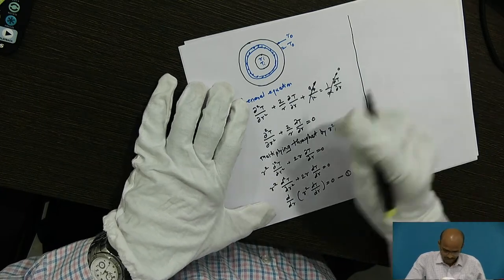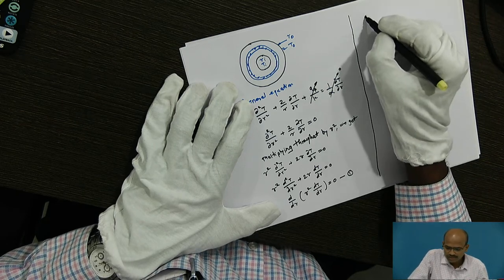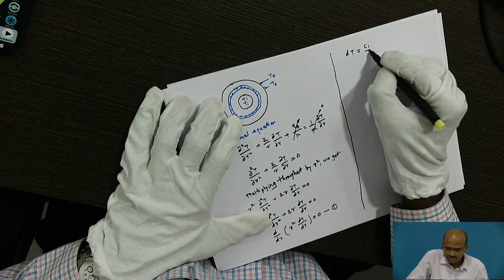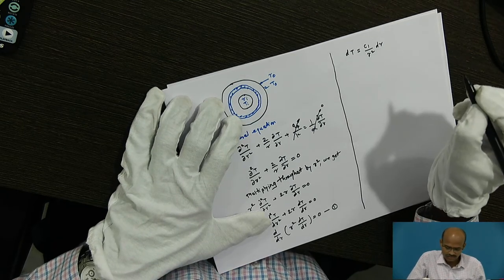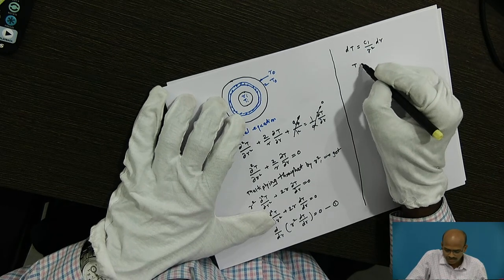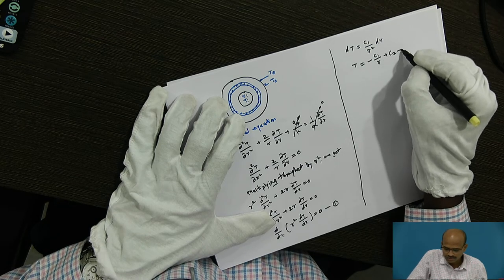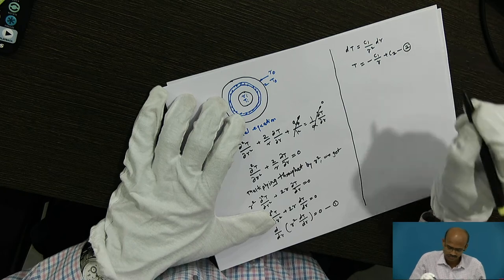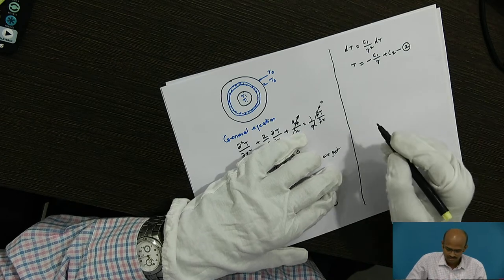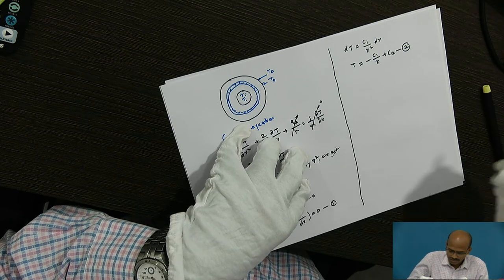Taking the integration of equation number 1, I can write dT = C1/r² dr. Taking the second integration also, it becomes T = −C1/r + C2. This is equation number 2. In this equation, we have two constants C1 and C2, so their relations are to be obtained. For that purpose, I will be using the boundary conditions.